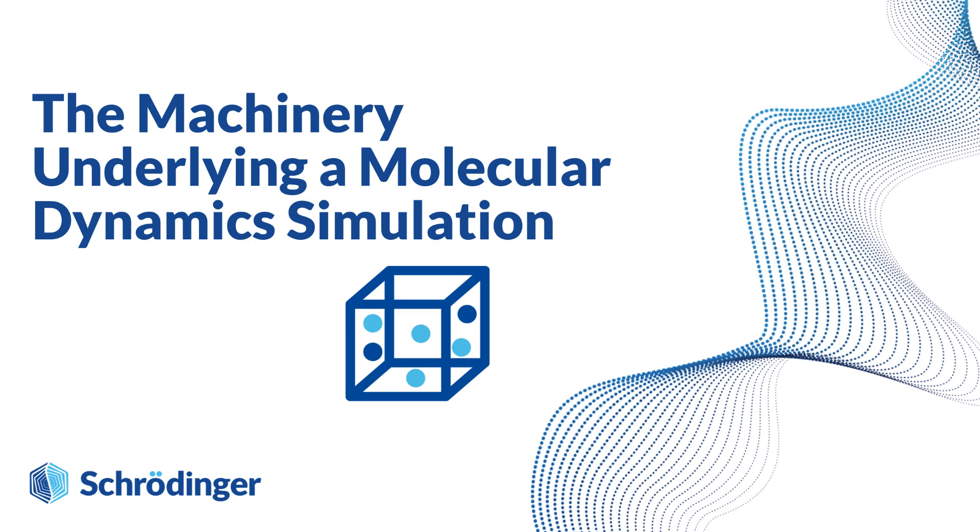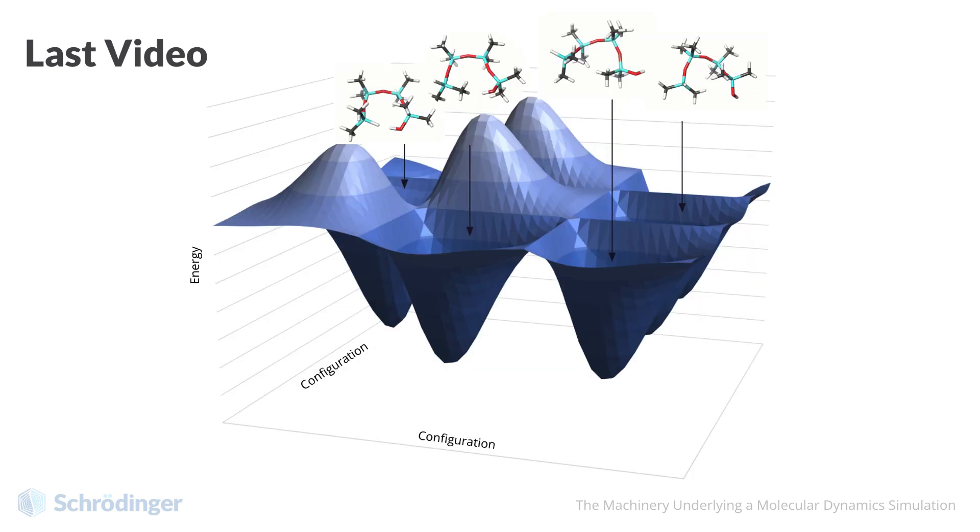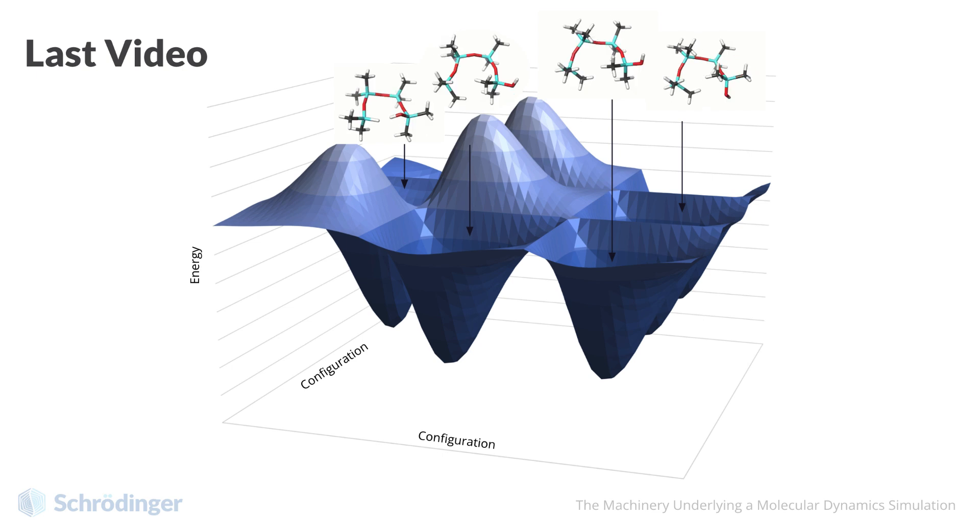Last video, we learned the basic concept of a trajectory. We also discussed how time-dependent sampling of phase space with molecular dynamics simulation can be used to obtain system properties.